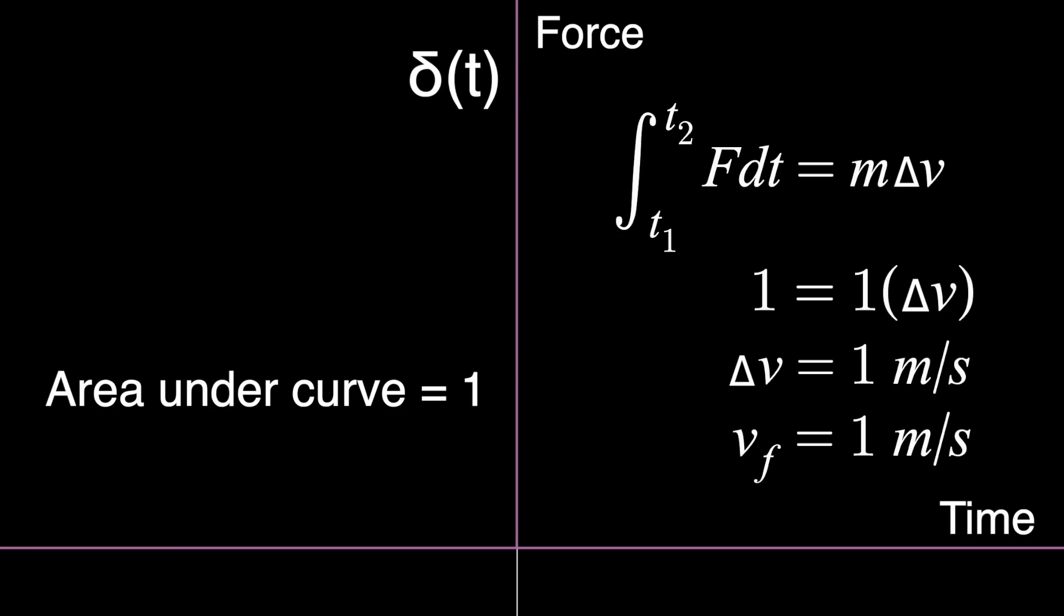But this change in velocity happens in a single moment. T1 and T2 are both zero, really. So when that force is applied, what we'd see is the block immediately jump from rest to one meter per second. And if there's no friction, it will just coast from there.